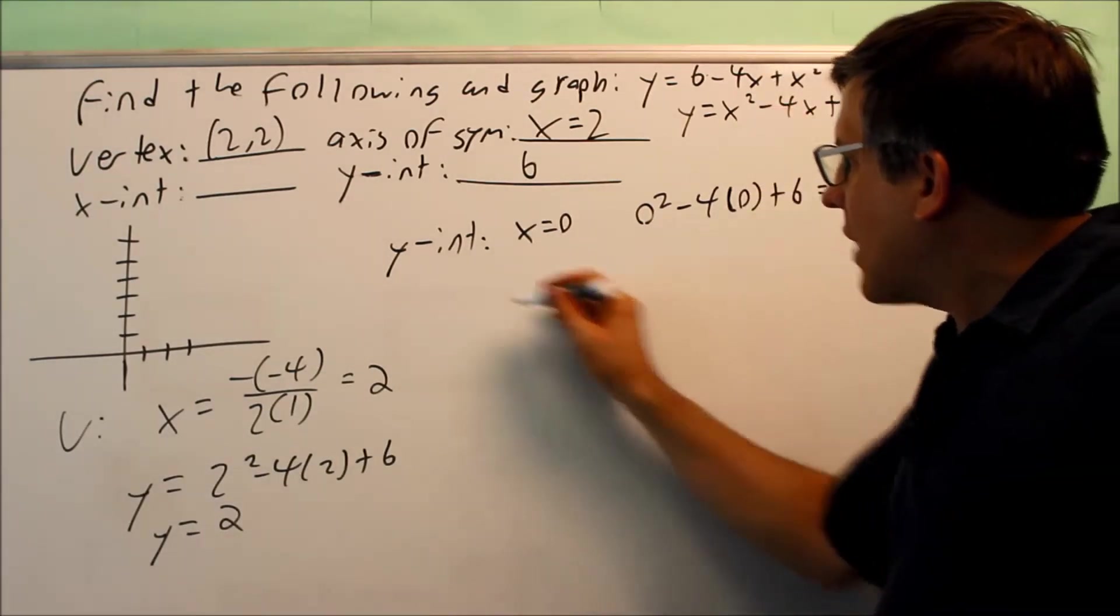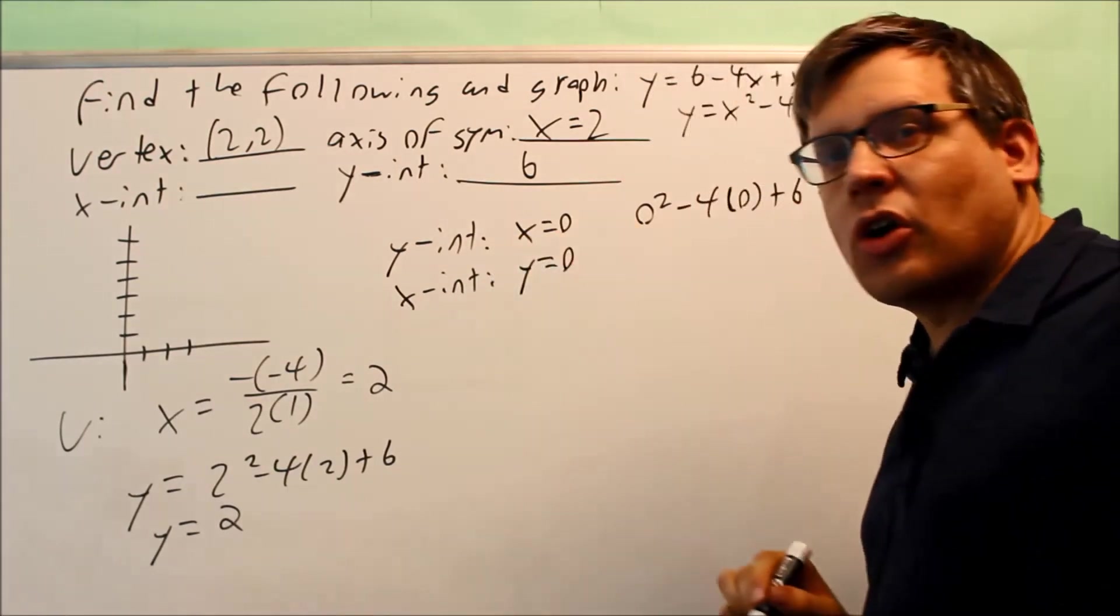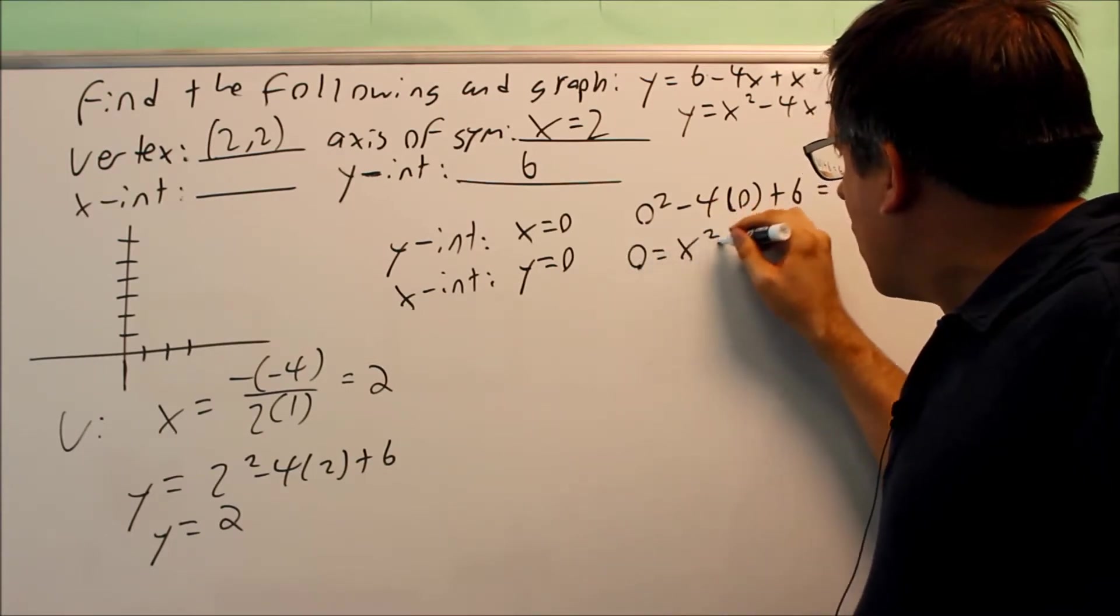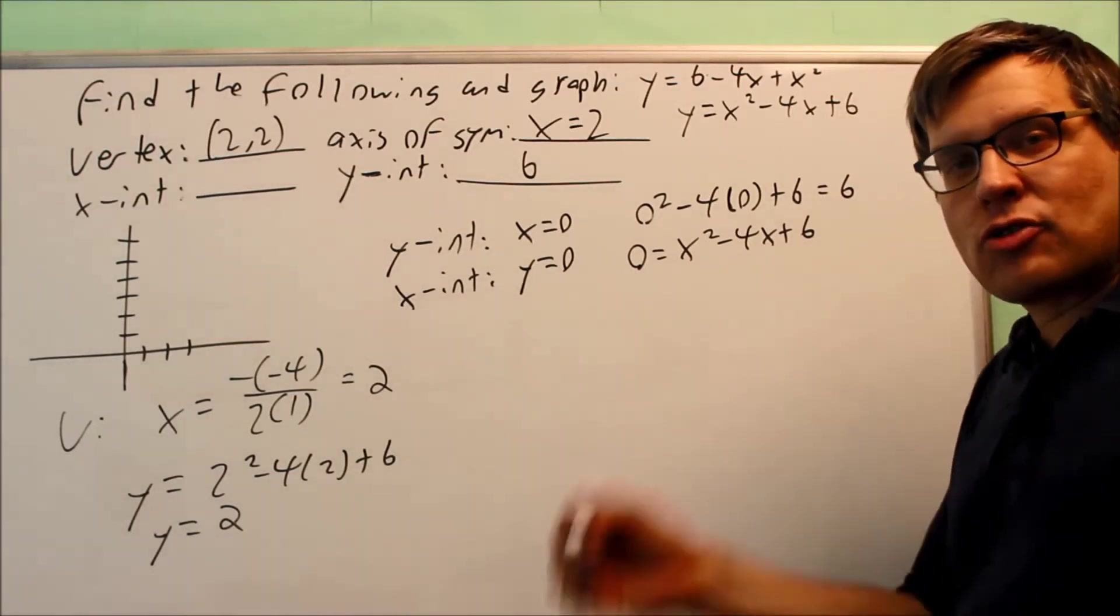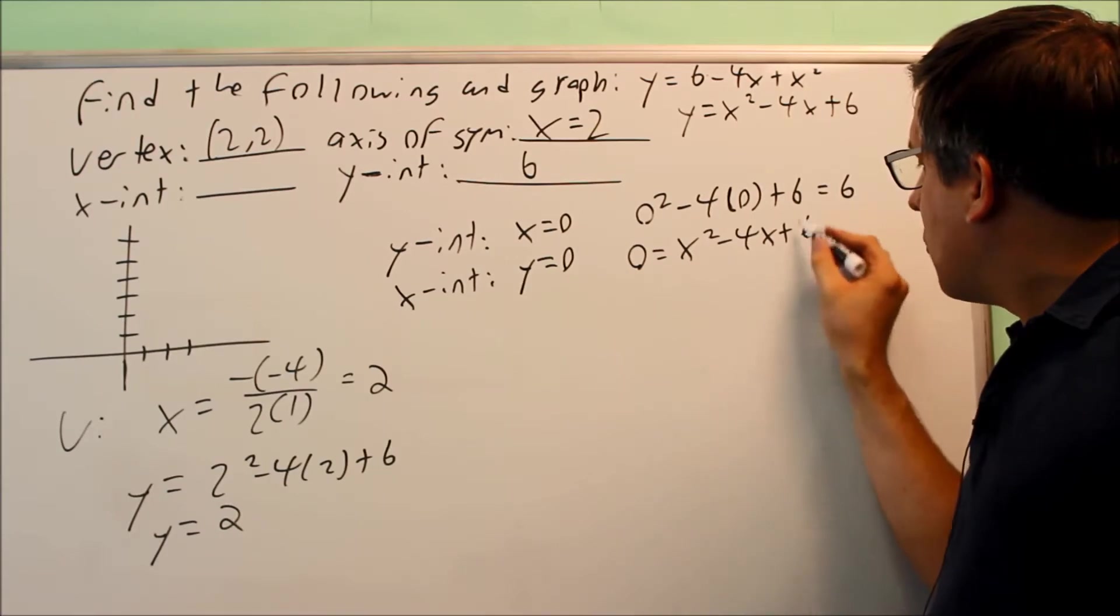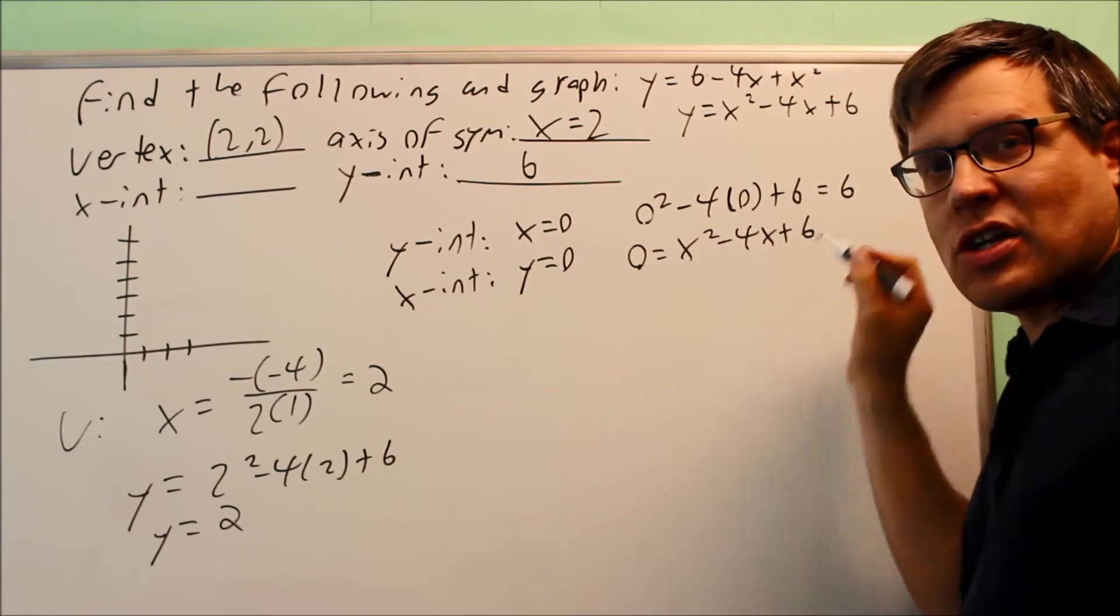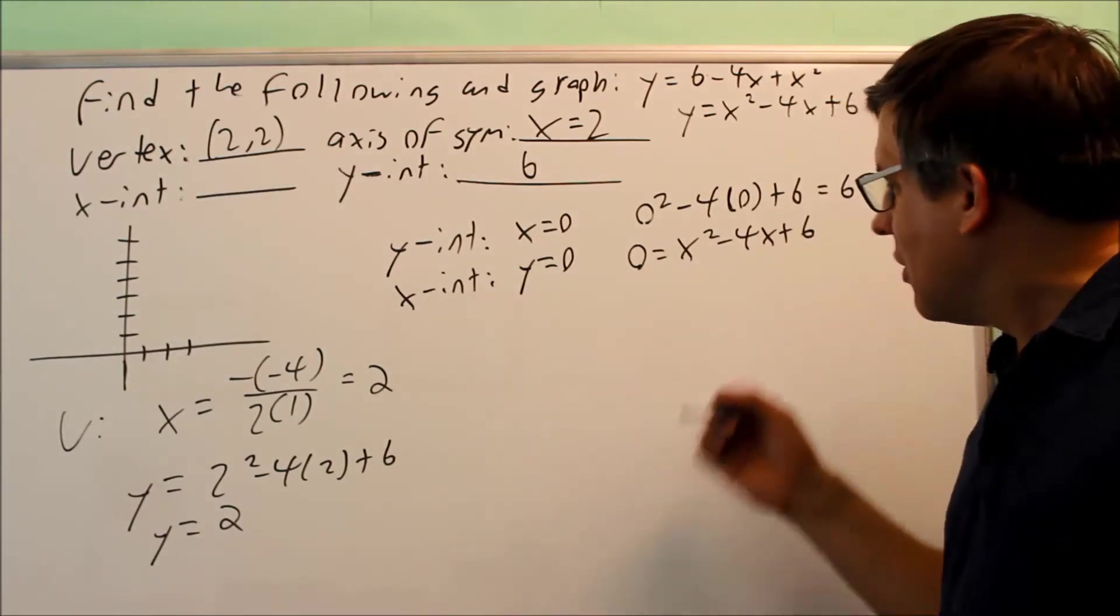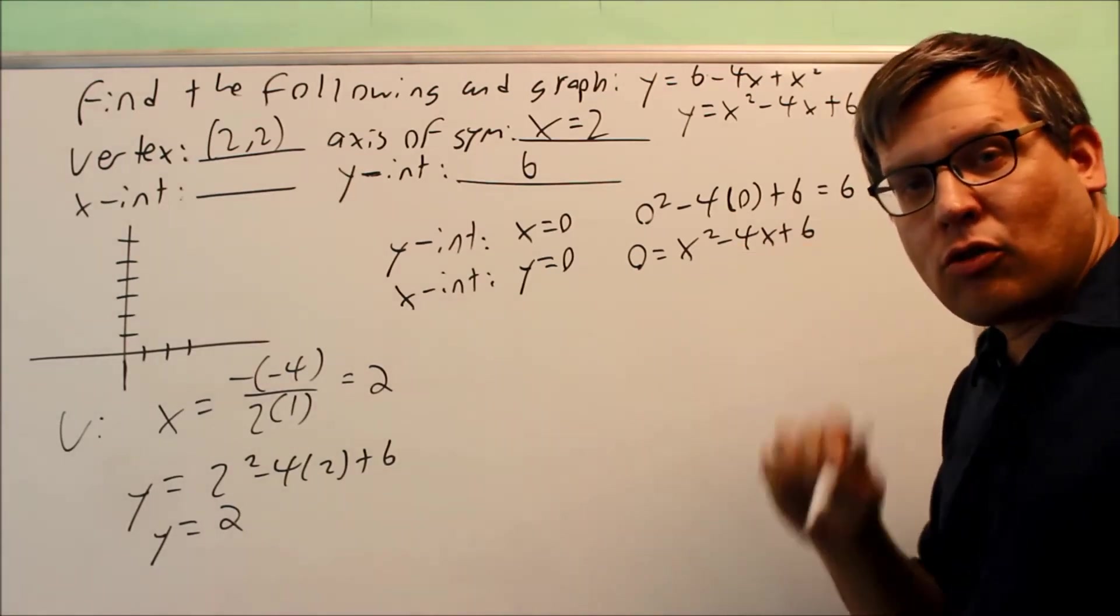Now I want to do the x-intercept. The x-intercept is where you put in a 0 for y. So by doing that, you're going to get 0 equals x squared minus 4x plus 6. So you have a couple different ways of solving this. The first one we want to try and do is factoring. If I try and factor this, I'm looking for two numbers that multiply to make 6 but then add to be negative 4. Well, that's not going to happen. There's not two numbers that work. So if I can't factor it, then the next thing to do would be the quadratic formula.